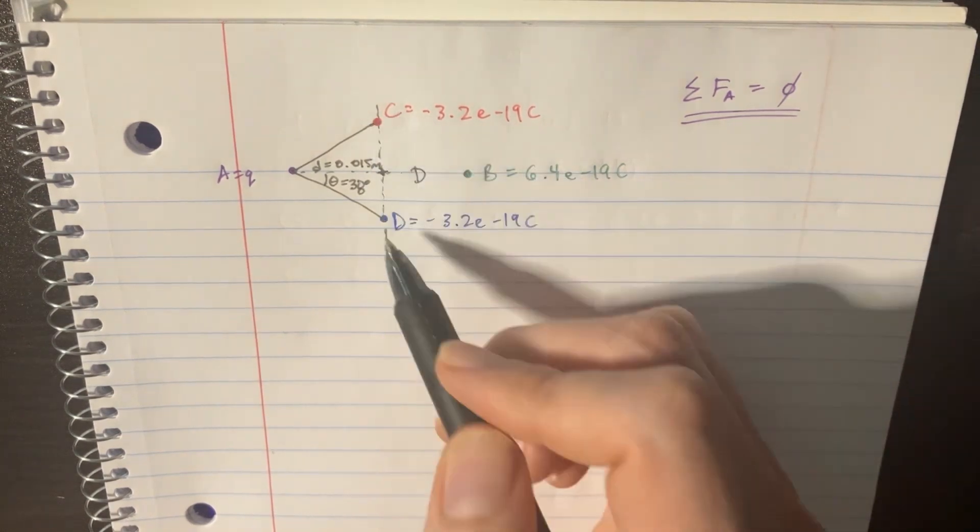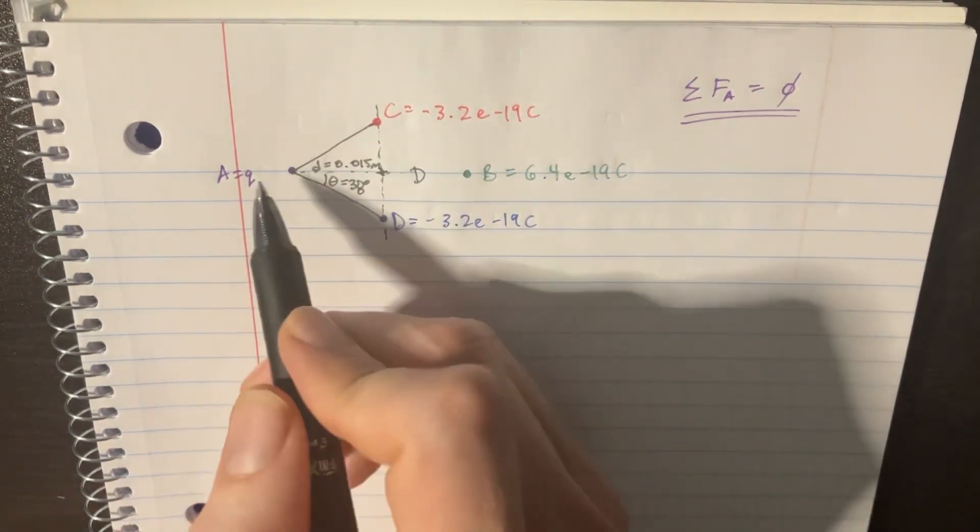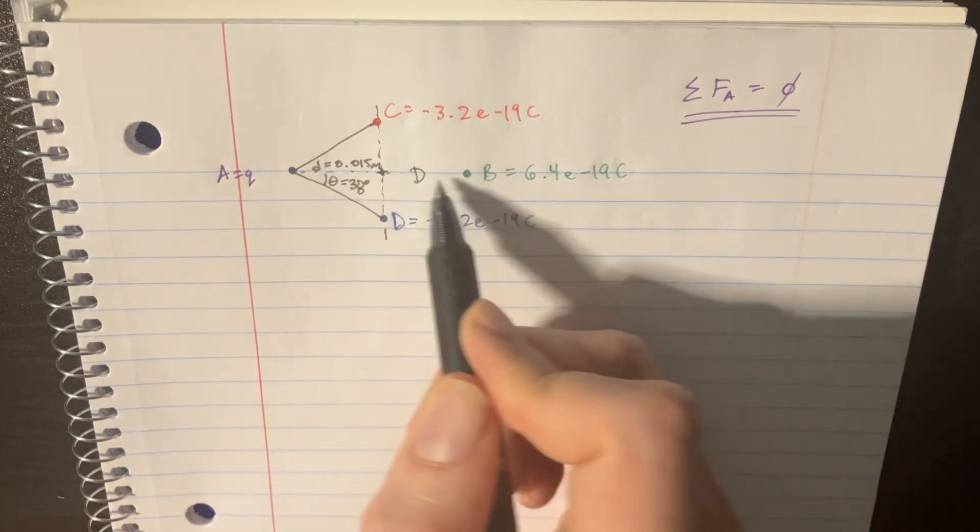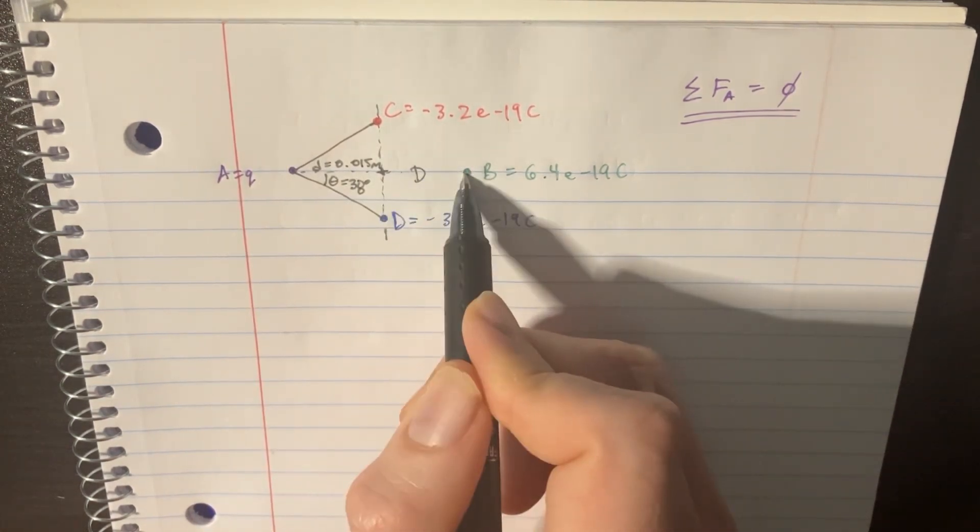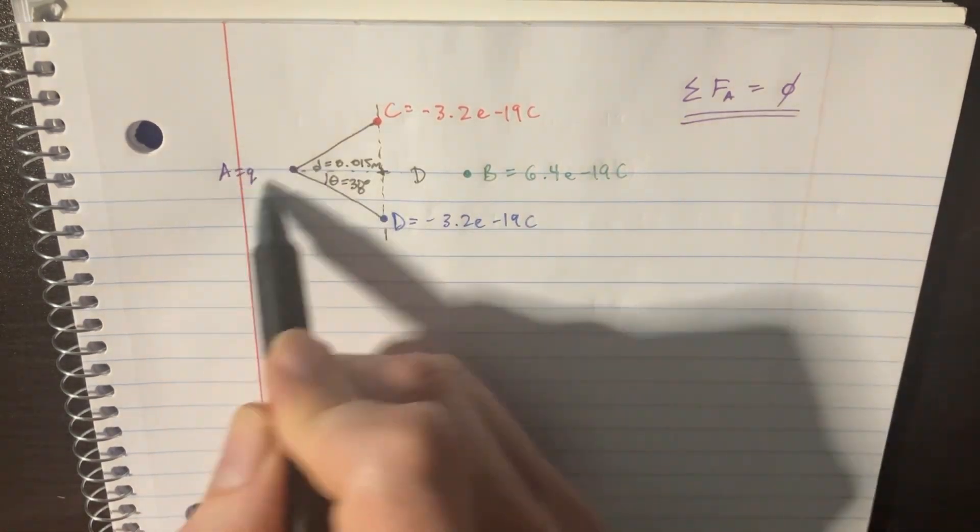B. This one's positive, these two are negative. We're really asked to figure out what would distance D be, this capital D, if the net force on A was zero.